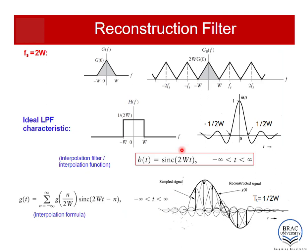Finally, let's talk about the reconstruction filter. After the signal is transmitted, we want to recover the original message. As we have seen, after sampling, the original spectrum is repeated along both the positive and negative frequency axes at intervals of fs. We want fs to be at least equal to 2W. We want to recover only the original spectrum and cut out all the repeated copies on the left and right.